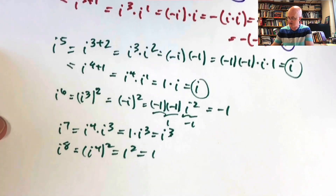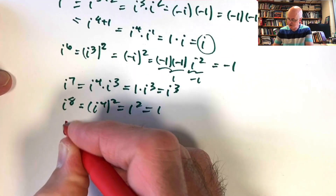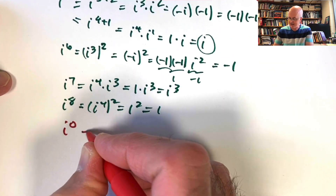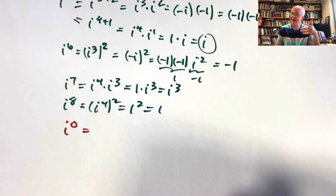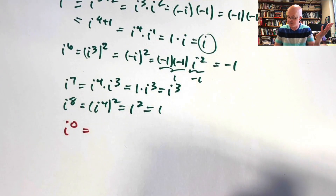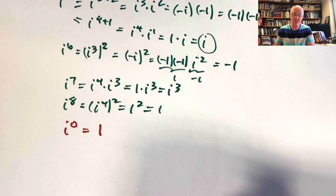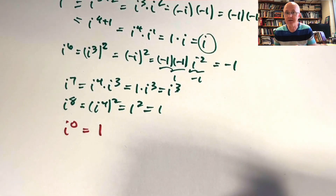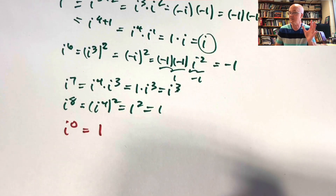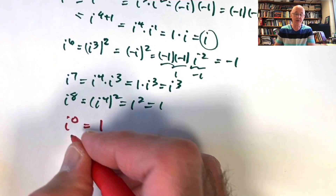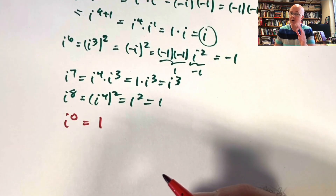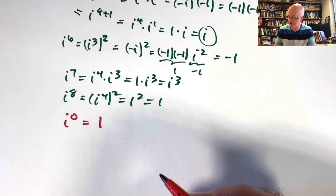How about other integer powers of i? What should i to the zero power be? Just like with any number, i to the first is i by definition, and i to the zero power should be positive one, since any non-zero number to the zero power is one — except zero to the zero power, which is an indeterminate form. If we want the rules of algebra to hold, i to the zero is one. We're going to see that this also forms a nice pattern geometrically in a few minutes.